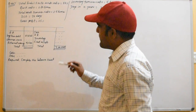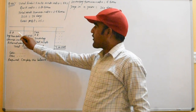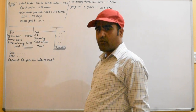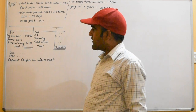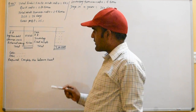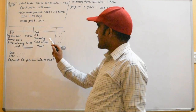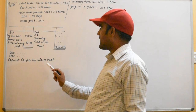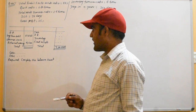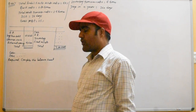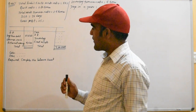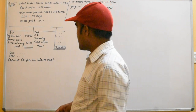We need to complete the balance sheet. The items include: accounts payable, long-term debt, common stock, retained earnings 97,500, cash, total assets, sales, and cost of goods sold.